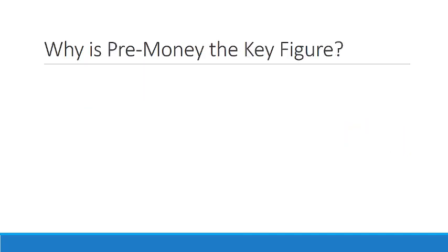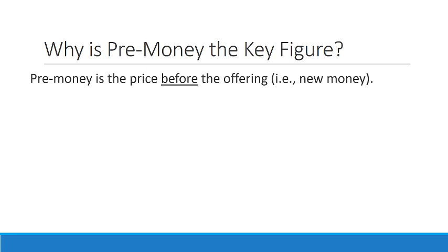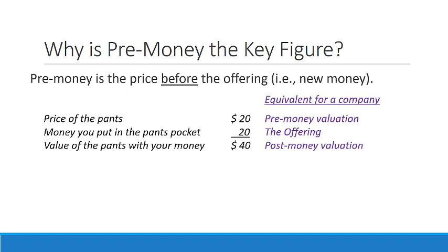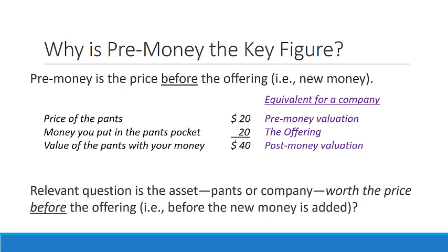Why is pre-money the key figure? Pre-money is the price before the offering, the new money. The pre-money valuation is equivalent to the price of the pants. The offering is equivalent to the money that you put in the pants pocket. And the post-money valuation is equivalent to the value of the pants with your money. So clearly, the relevant question is whether the asset — be it pants or a company — is worth the price before the offering, before the new money is added.